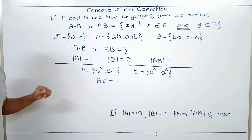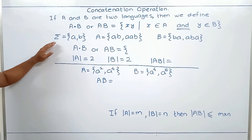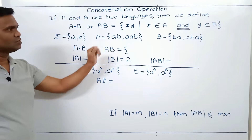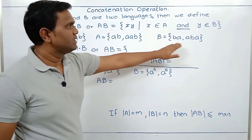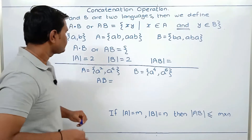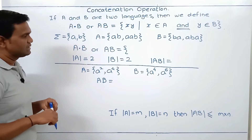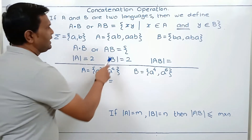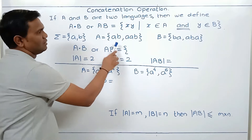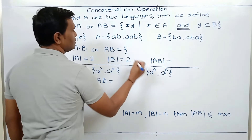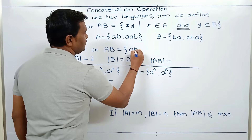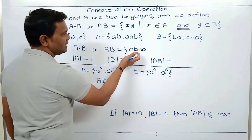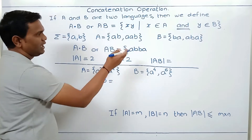Now let's understand this using an example. The alphabet contains A and B. Language A contains these two strings, language B contains these two strings. Now let's calculate concatenation of A and B. We take X = AB, Y = BA, so we get ABBA. AB is X, BA is Y, we get ABBA.